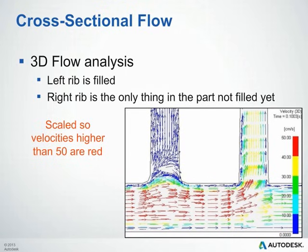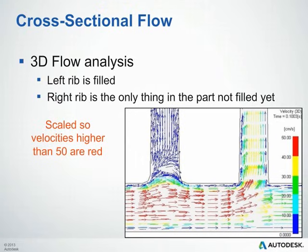Looking at a simple 3D flow analysis examining cross-sectional flow in a part with two ribs: the left rib is already full, so velocity is at zero there, while the right rib is still filling and velocity vectors are pushing up toward it. In the main nominal wall between the ribs, the material at the mold wall is frozen with zero velocity, and just below that the velocity is much higher. This illustrates how cross-sectional flow can vary significantly through the thickness of a part.